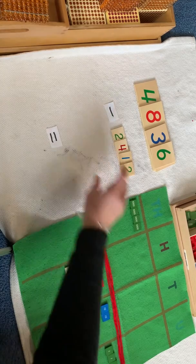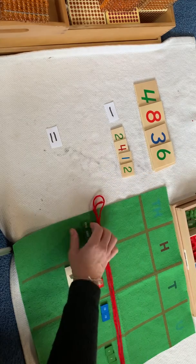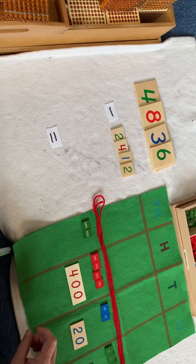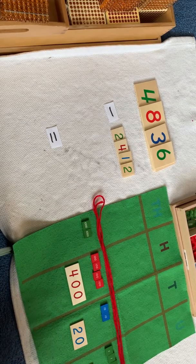Now we need to take away 2 thousands. Take away 1, take away 2. Bring down what's left. And that's our answer. Our answer in thousands is 2,000.